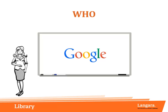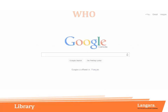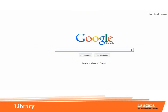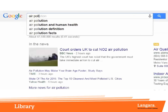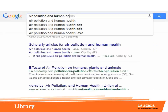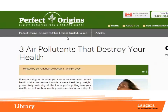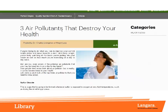Let's start our research by doing a Google search to see if we can find any reliable sources on the web. Here's a page that we found through a Google search. We can see it refers to itself as a trusted source — let's see if this is true.